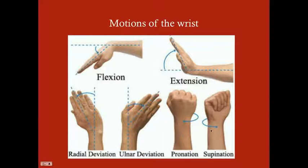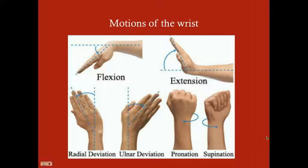Pronation and supination are 180-degree anterior-to-posterior rotations at the wrist. A good way to remember: if you're holding a bowl of soup, you're supinated — palms facing outward. Pronating is lying your hands flat with palms facing down.